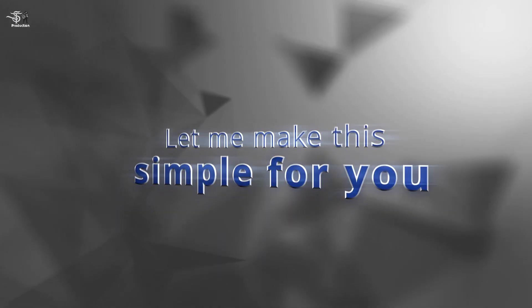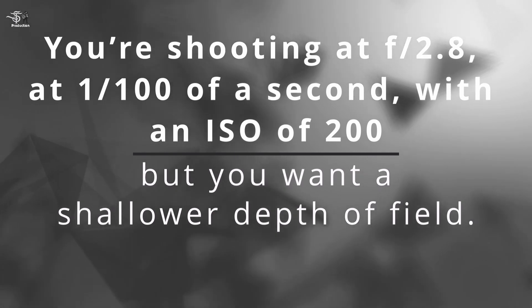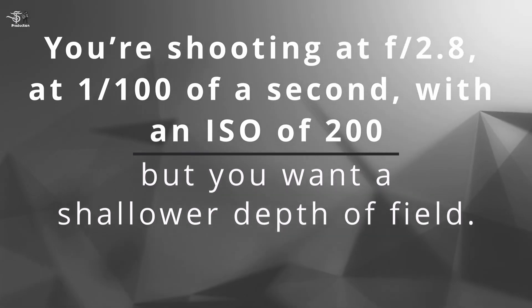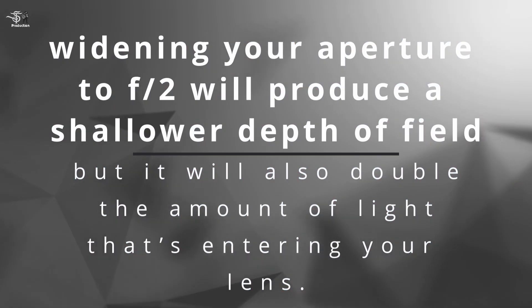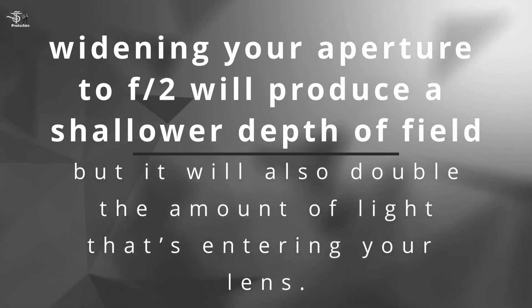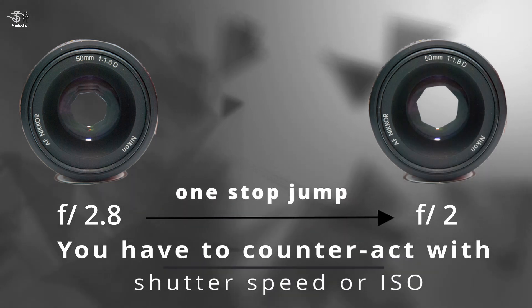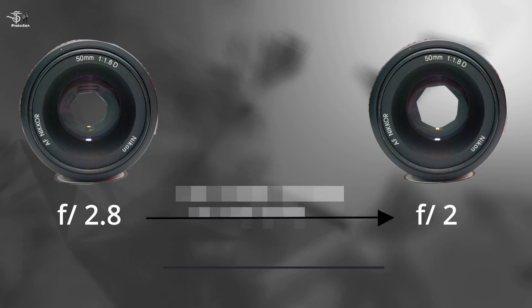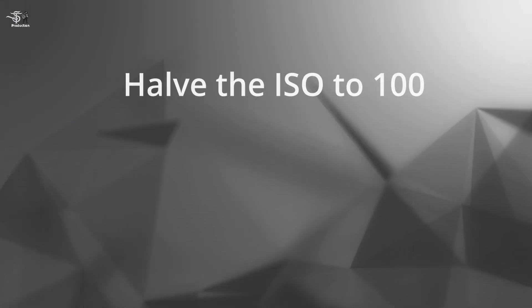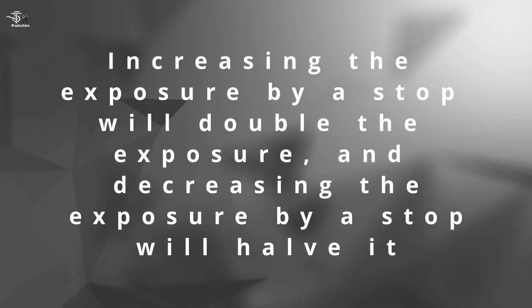Let me make this simple for you. You are shooting at f2.8 at 1/100 of a second with an ISO of 200, but you want a shallower depth of field. You know that widening your aperture to f2 will produce a shallower depth of field, but it will also double the amount of light entering your lens. You have jumped one stop with your aperture and made the exposure too bright, so you have to counteract with the shutter speed or ISO. To do this, you can halve the ISO to 100 or double the shutter speed to 1/200 of a second.